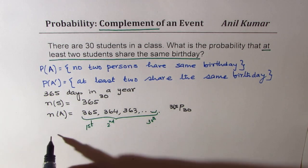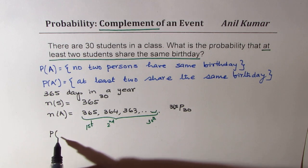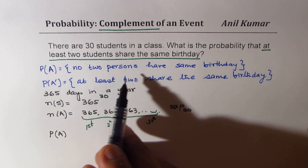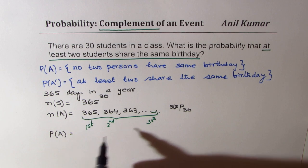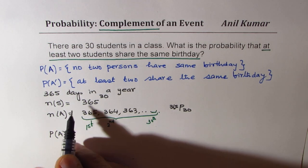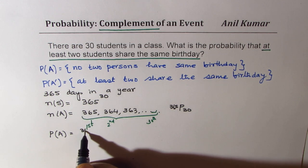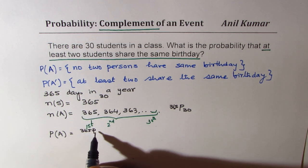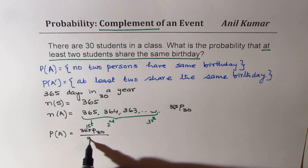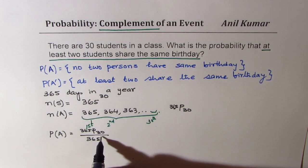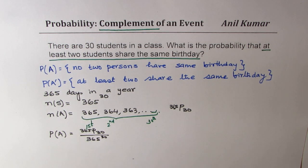And therefore the probability for no two persons having same birthday will be favorable, which is 365 P 30 over 365 to the power of 30. So that becomes the probability for no two persons having the same birthday.